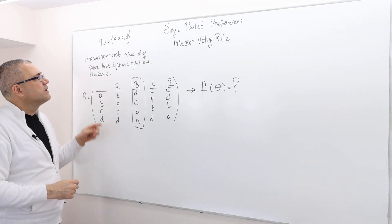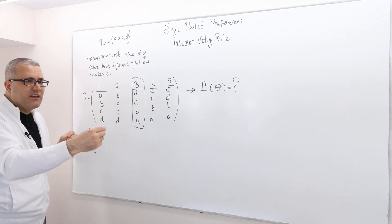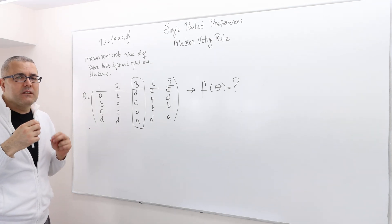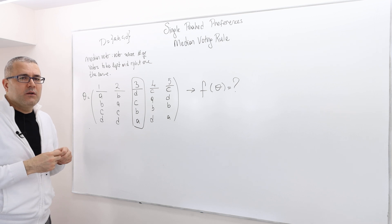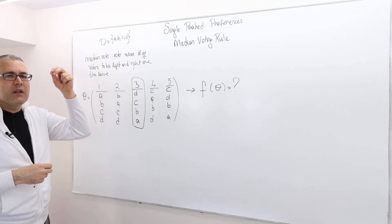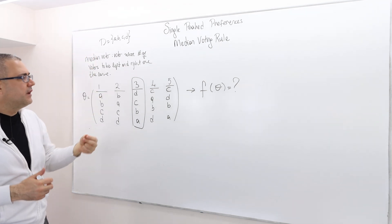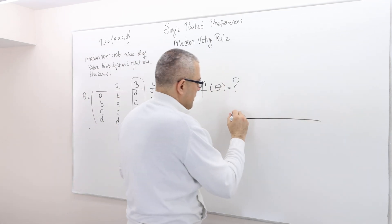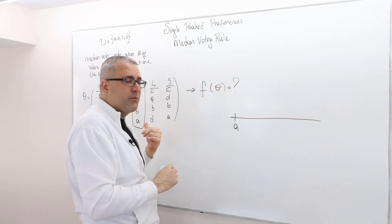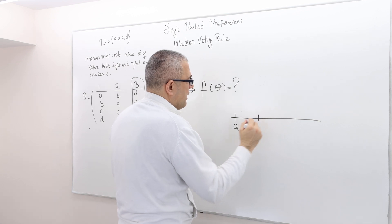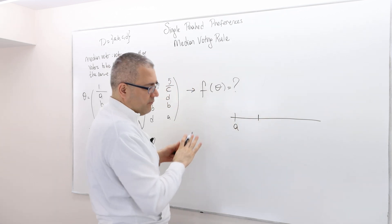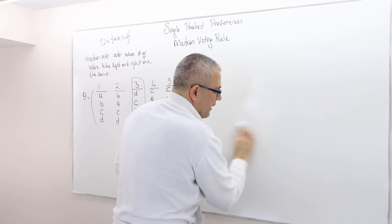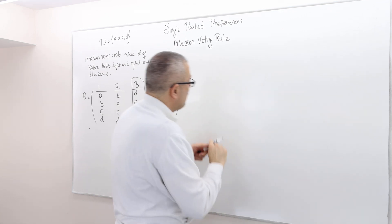This is single-peaked. So we rank the voters according to their peaks. I need a little more space, so let me adjust this. Here we have alternatives A, B, C, and D on the axis — this is sort of the utility scale.